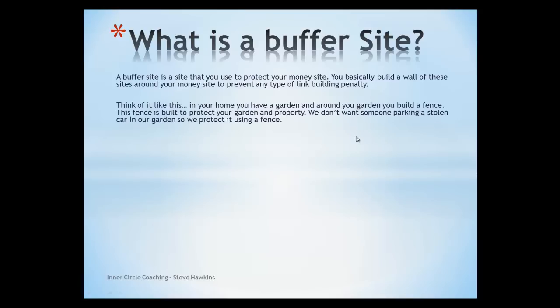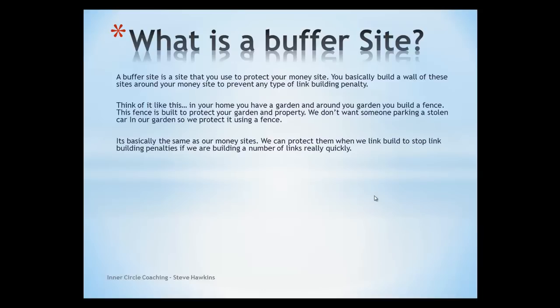You can think of it like this: in your home you have a garden, and around your garden you build a fence. The fence is built to protect your garden property. We wouldn't want someone parking a stolen car in our garden or trespassing, so we build this fence to protect our property. And this is basically the same for our money sites — we build links to stop any link building penalty from Google.